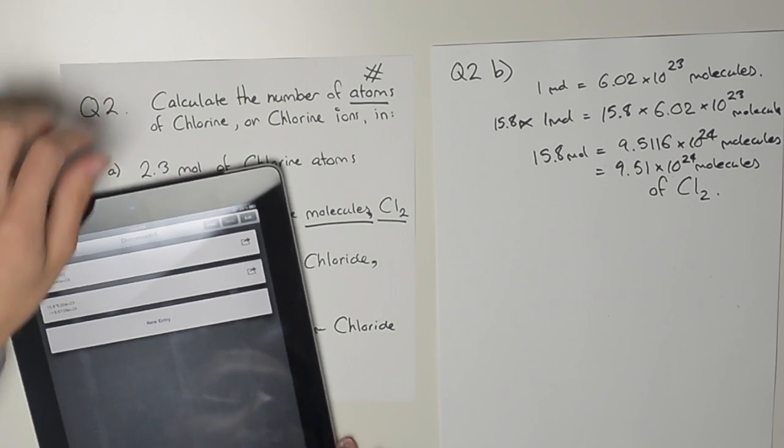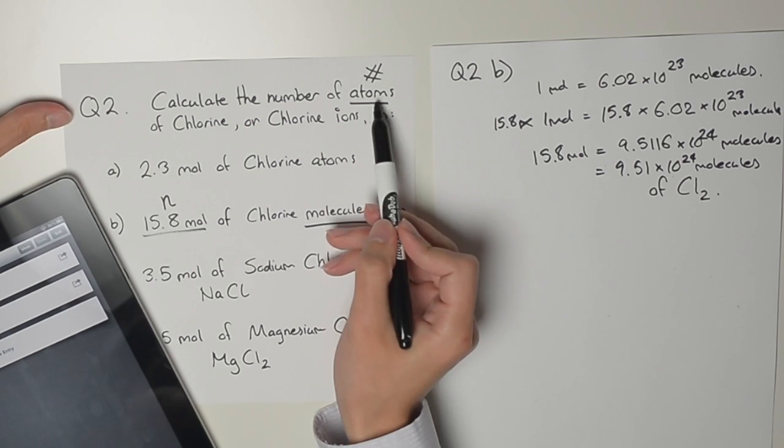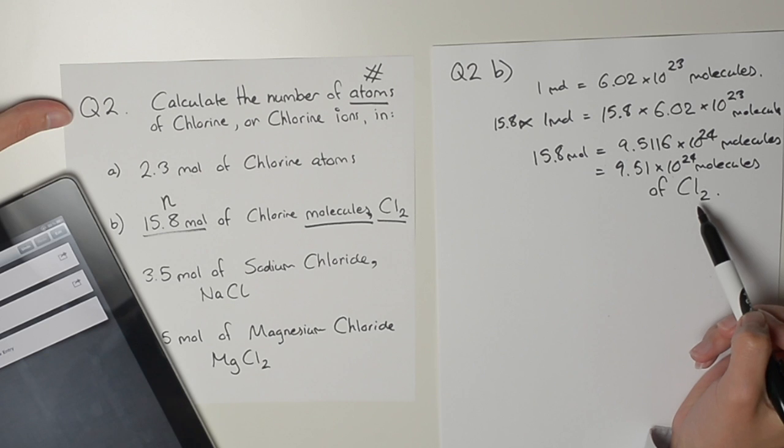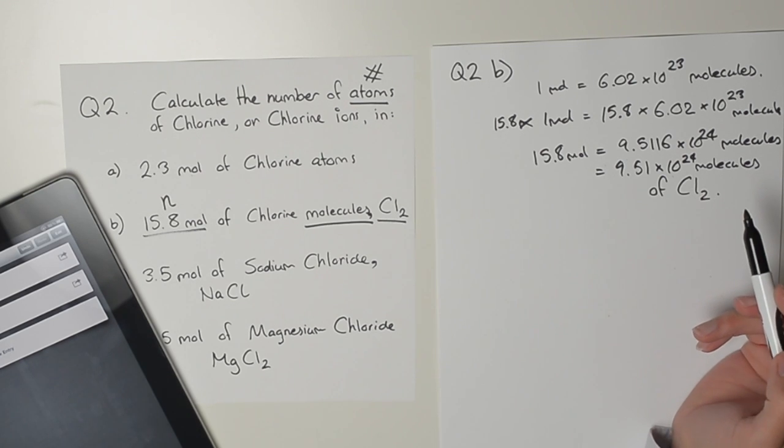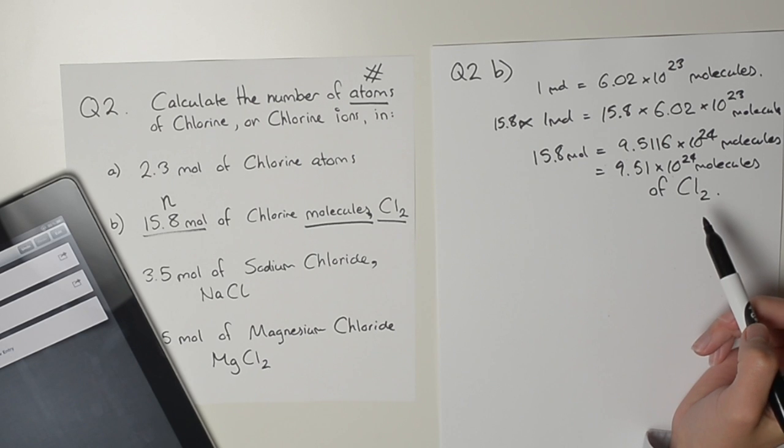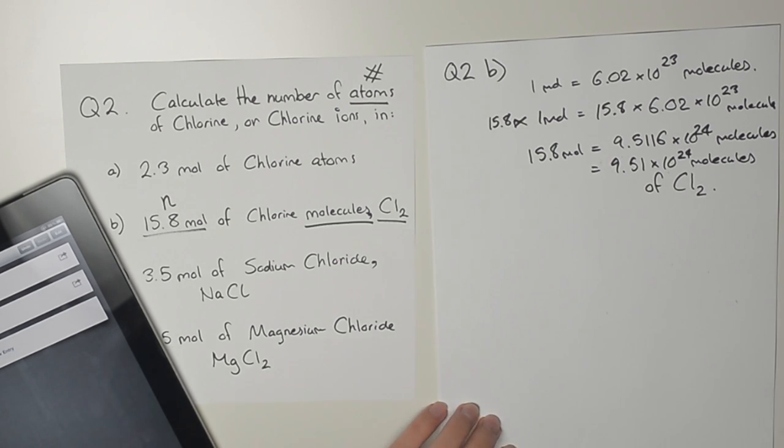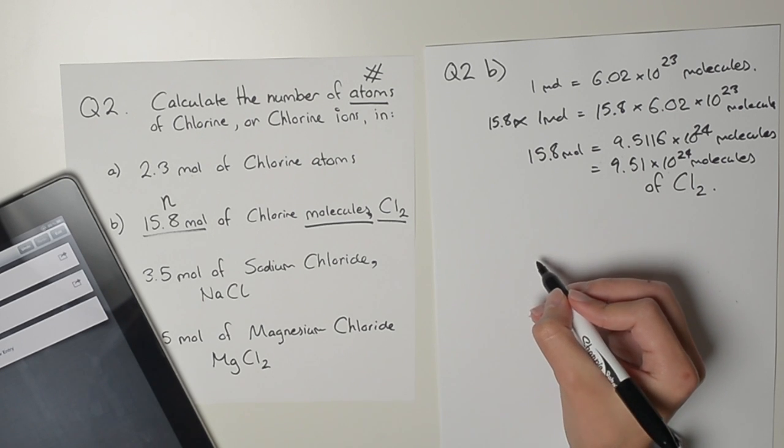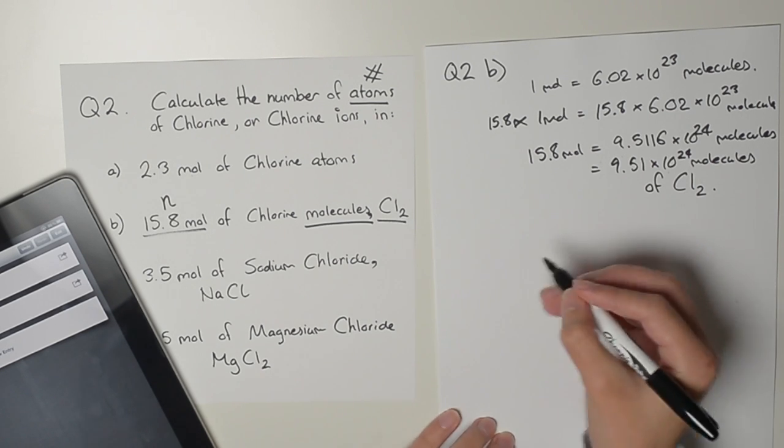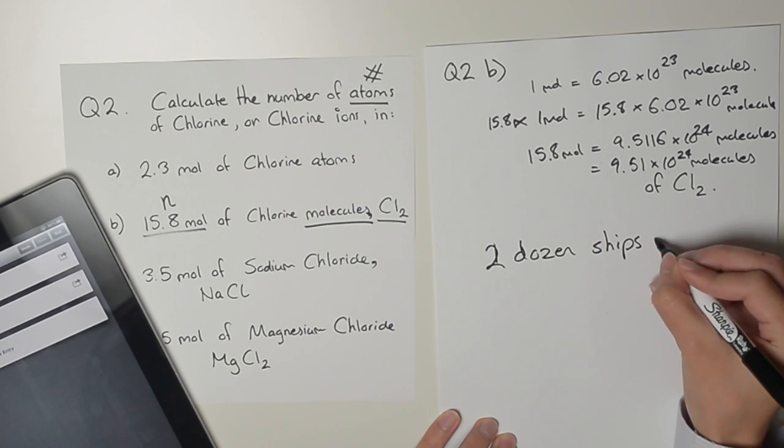Now the original question asks to calculate the number of atoms. We've got molecules. If you think about it, we should double our answer. The reason is, if I have, say, two dozen ships in a fleet, each carrying chlorine gas.